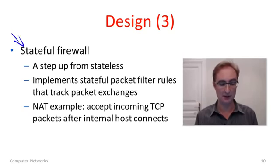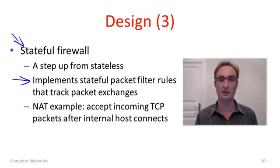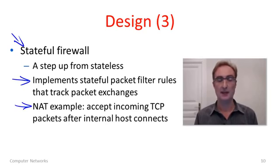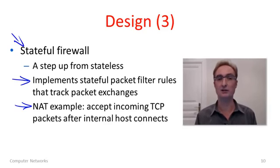A step up is a stateful firewall, which implements the same kind of packet filtering rules looking at packet attributes, but allows some state to track the exchange of packets, model what's going on, and make decisions accordingly. That allows you to make if-then rules. A NAT device is a good example — as well as doing address translation, it allows connections to be made from an internal to an external host, and if that has happened, it allows the corresponding packets from external hosts back into the private network. So a NAT box implements an if-then rule: if a connection has been established from the inside, then allow packets in from the outside.